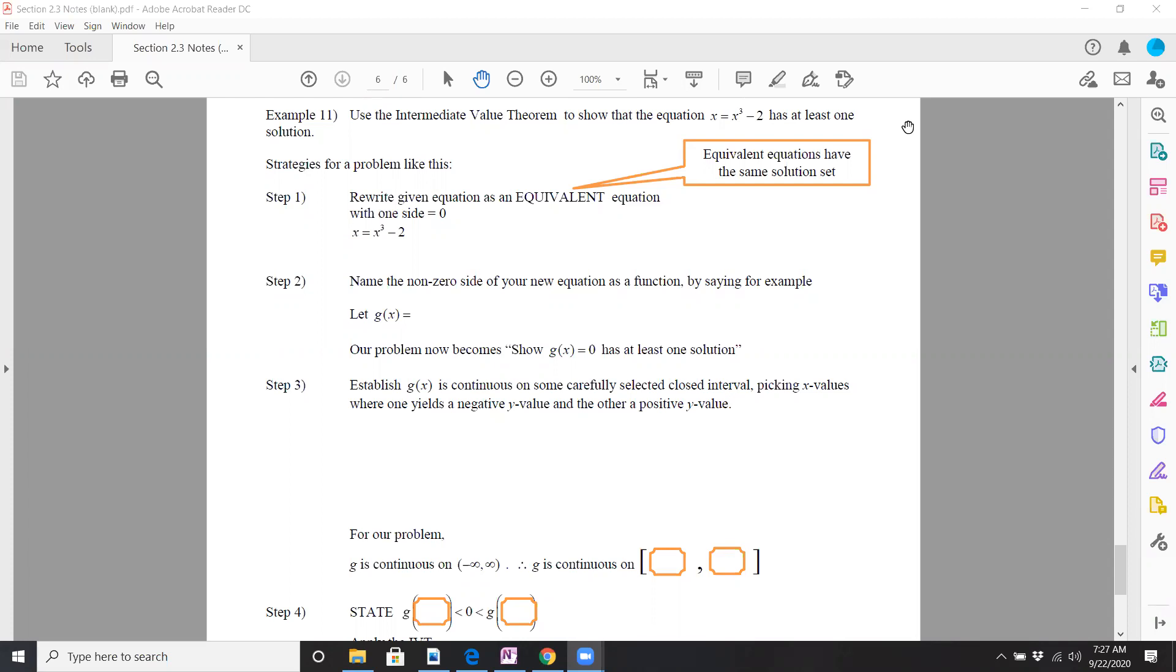so it's kind of this interesting cubic function has at least one solution. If you were to solve x equals x cubed minus two, that's just really hard to do analytically. I think you'd have to do it graphically. We have to use the intermediate value theorem to help you verify that this does have at least one solution.